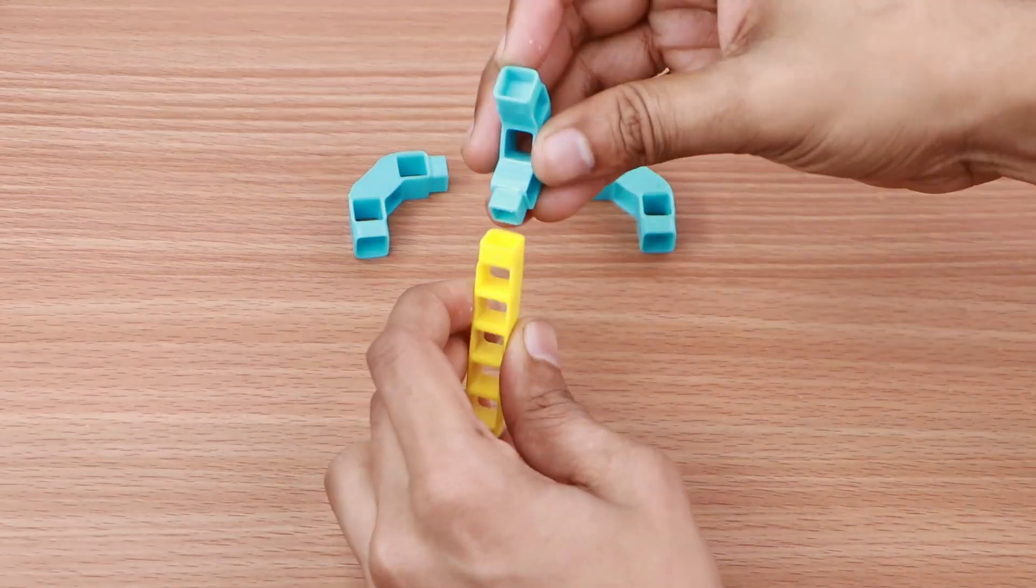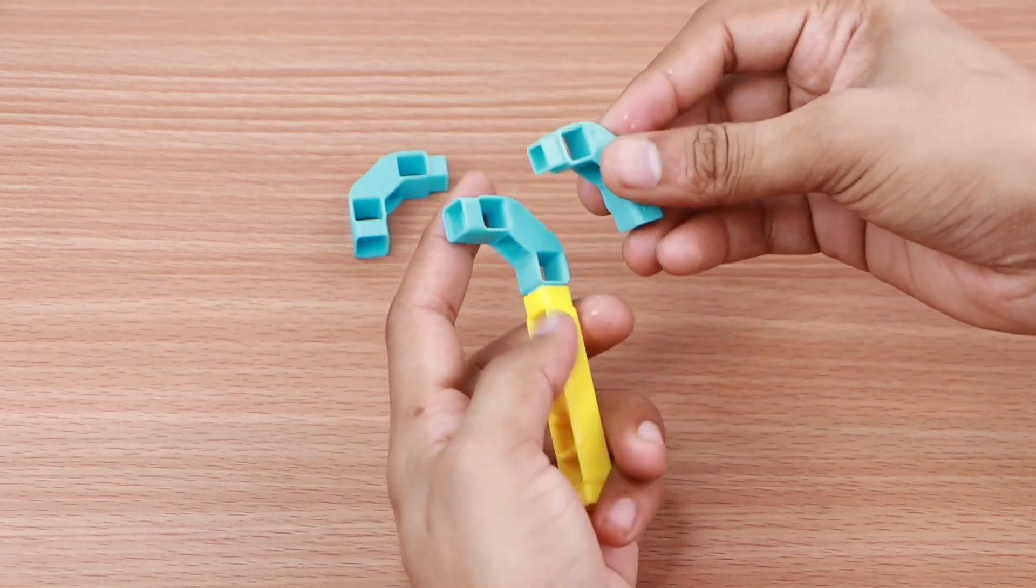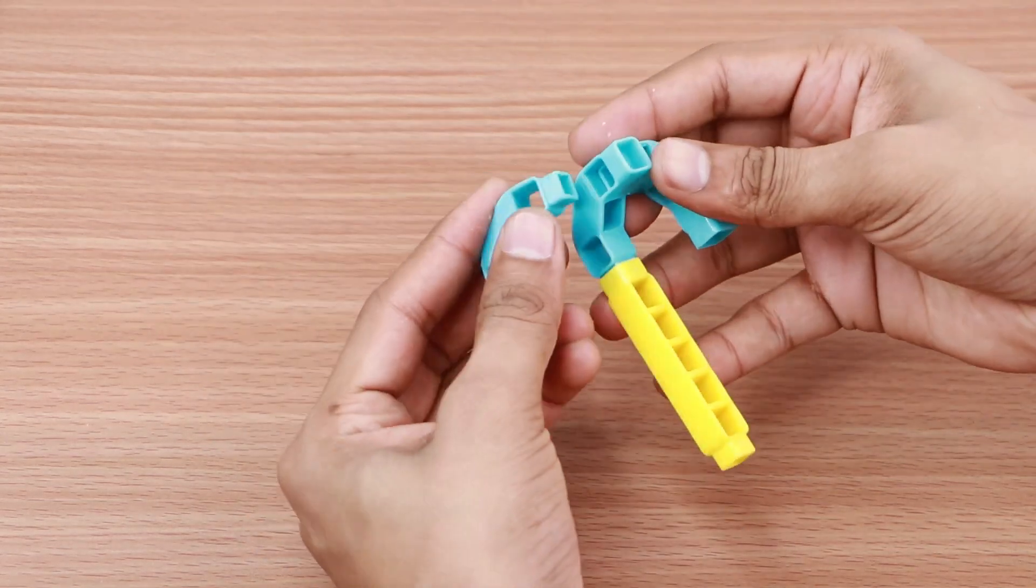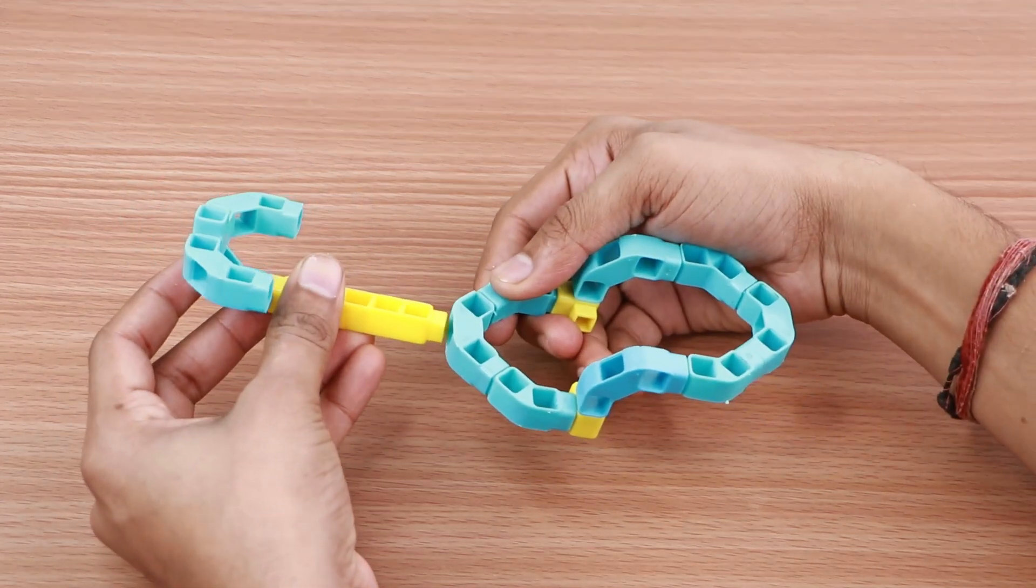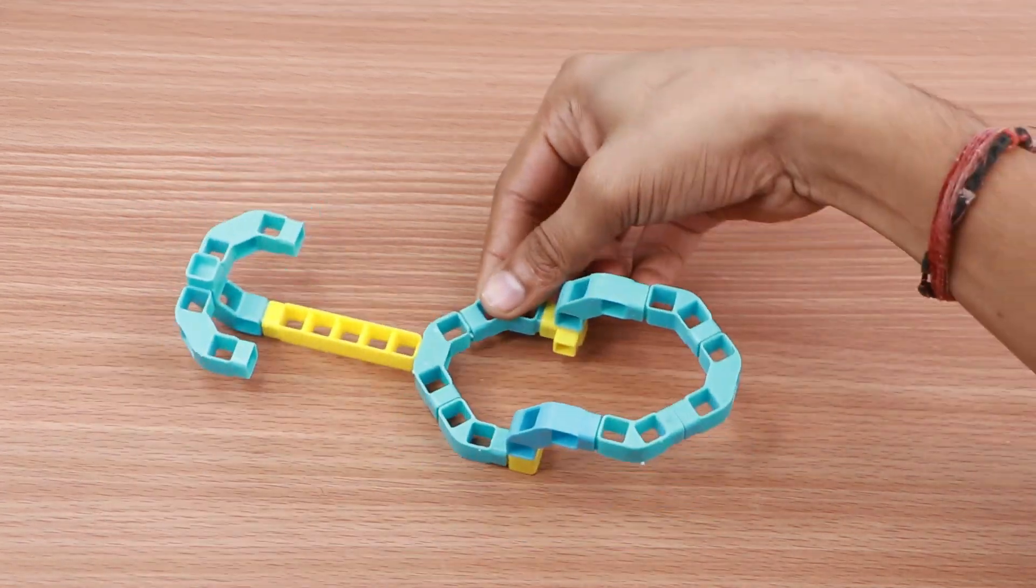Now take 3x3 hole elbows and 1x5 hole beam and join them in the shape of an anchor as shown. Connect the sub-assembly to the base as shown. Our Wi-Fi mobile base is ready.